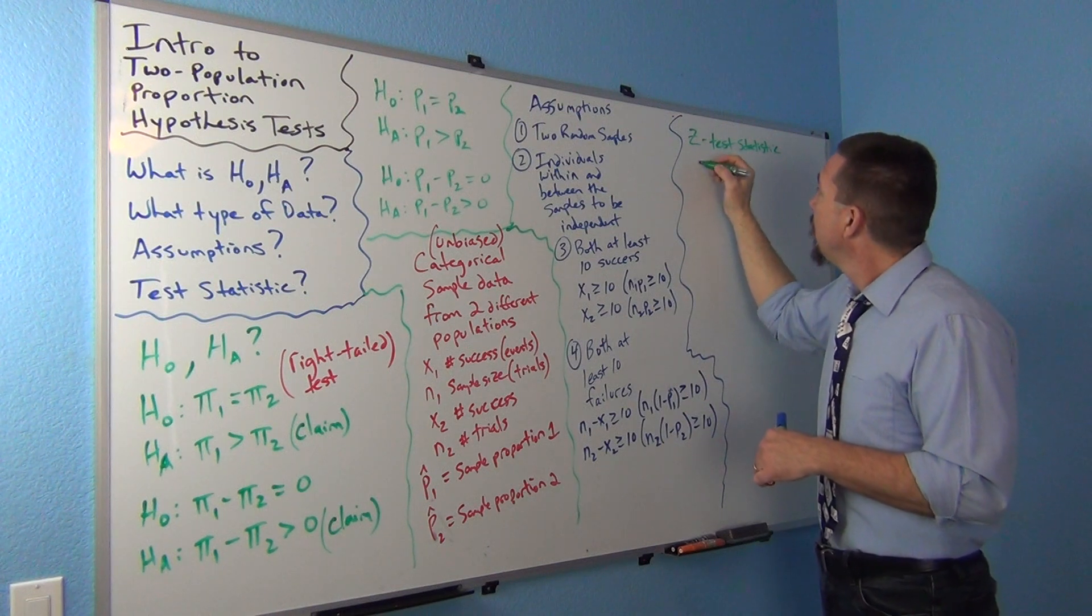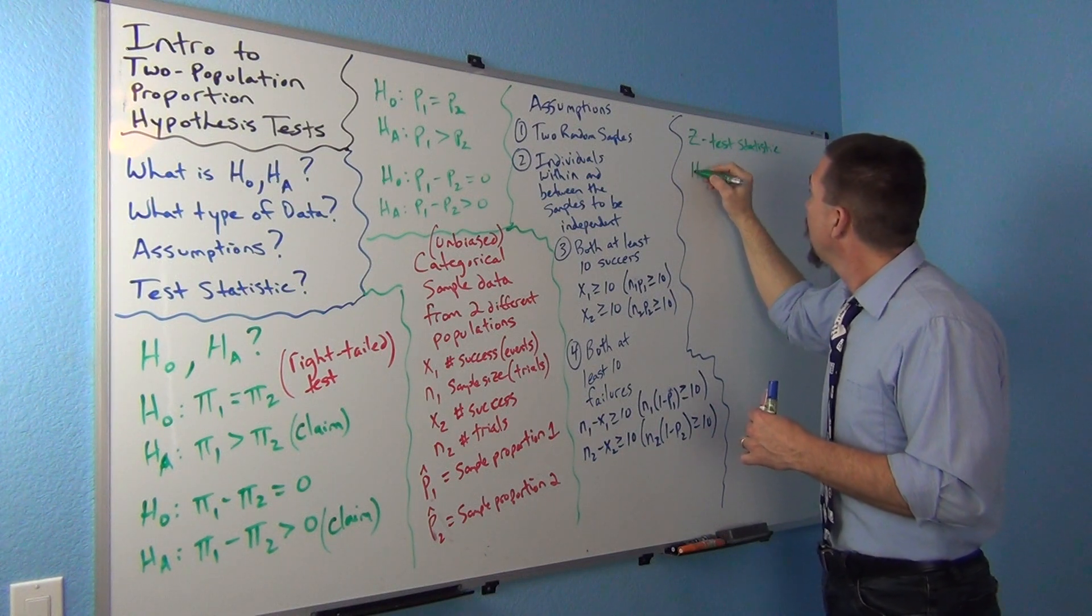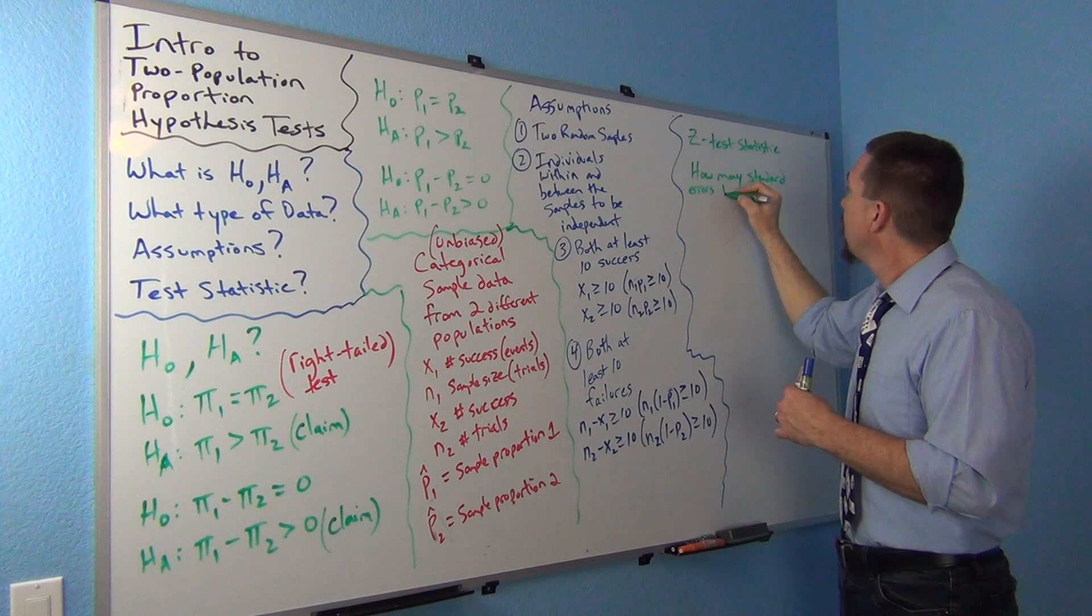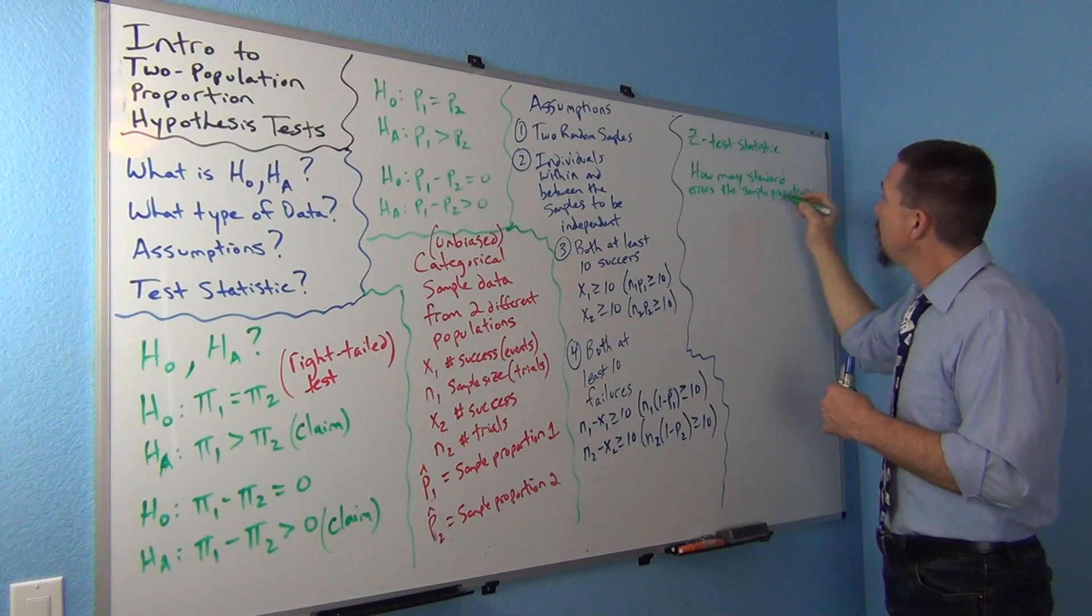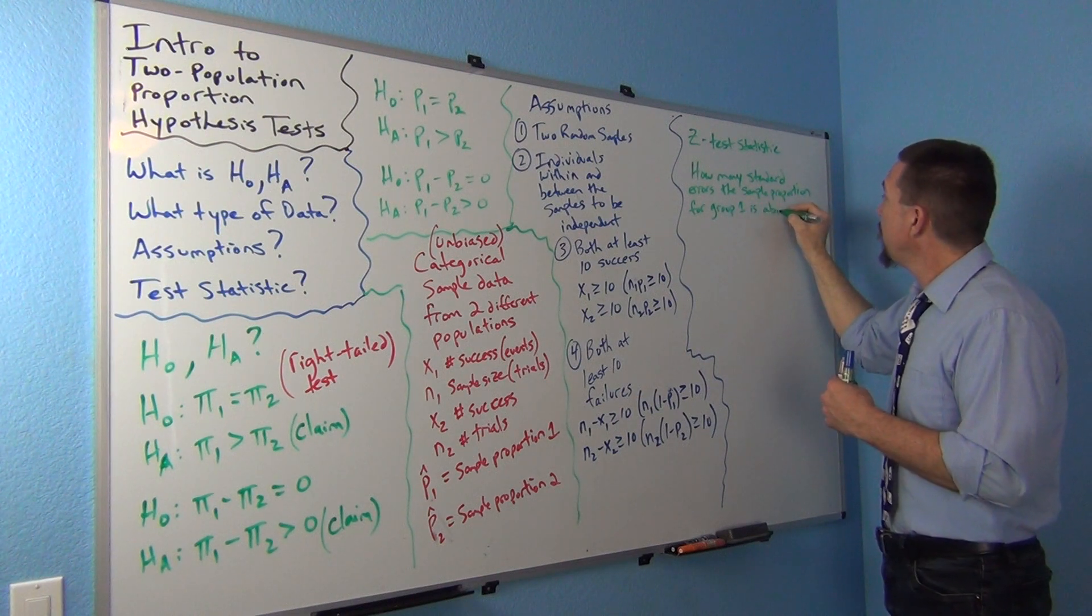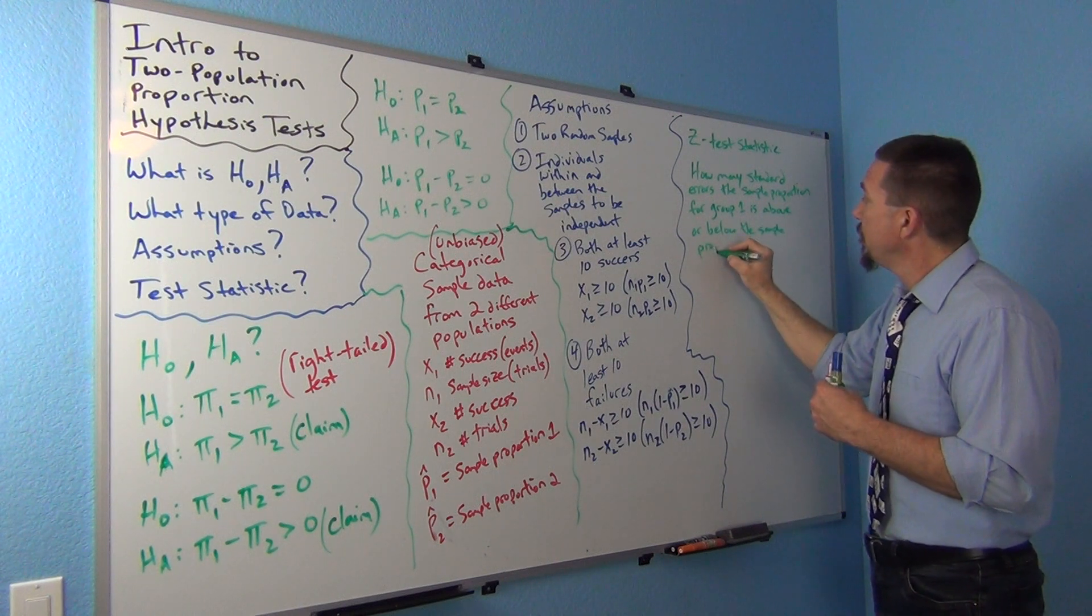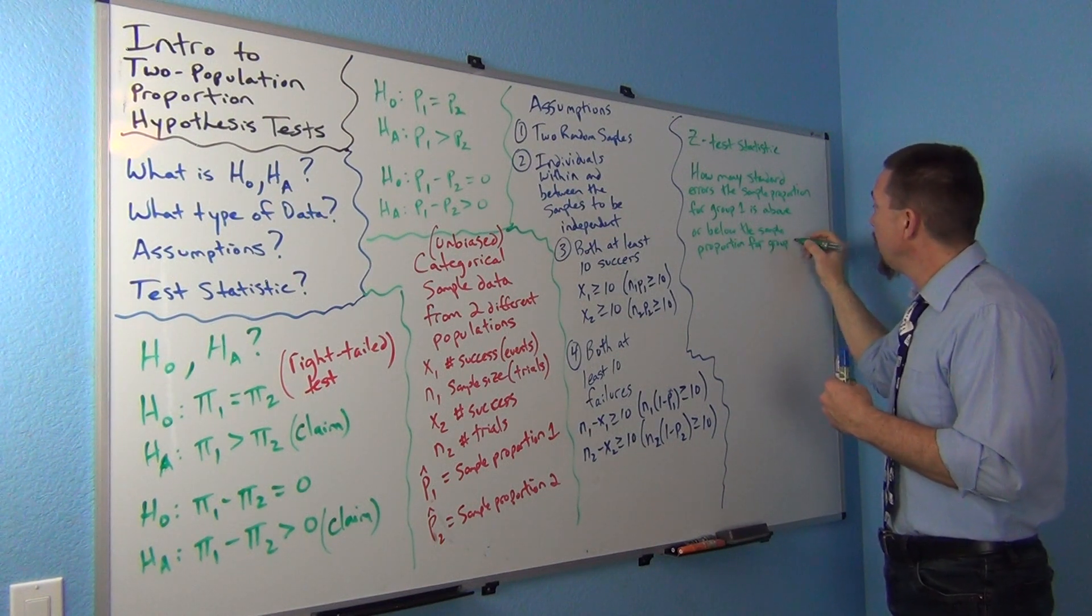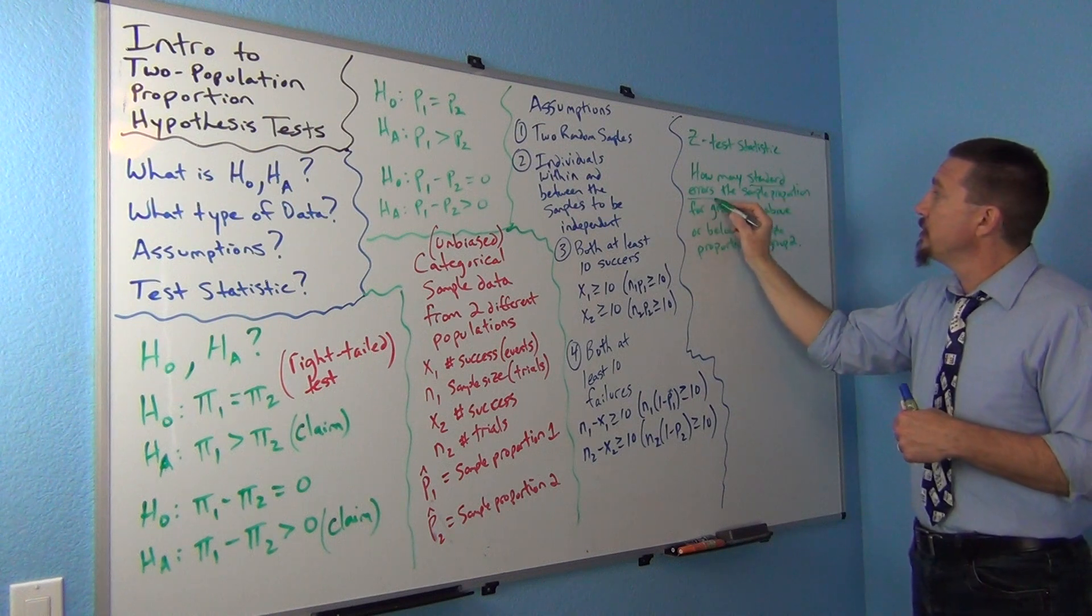So, the Z test statistic will be our test, but again, this is going to be a two population now. So the sentence, the explanation is a little bit different. So, it's going to count, so it's going to tell me how many standard errors the sample proportion for group one or sample one is above or below the sample proportion for group two or sample two. So, notice again, number of standard errors. That's the key.